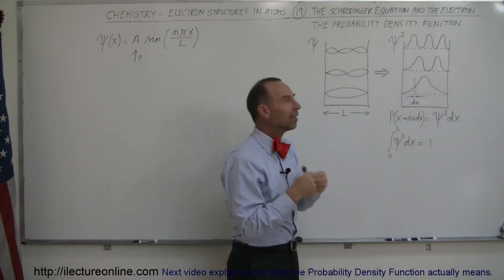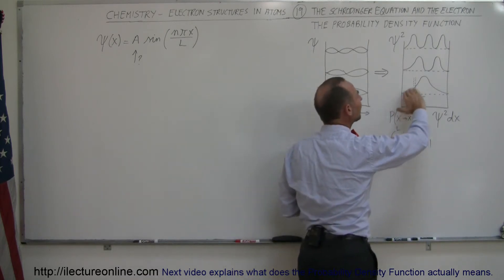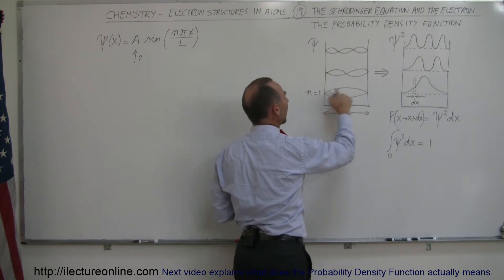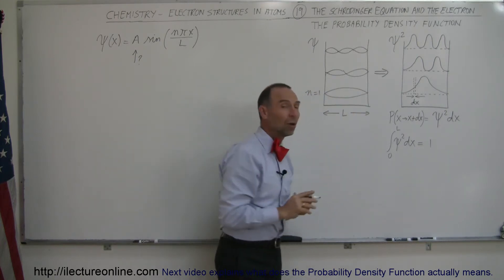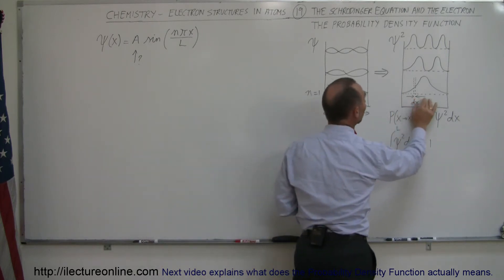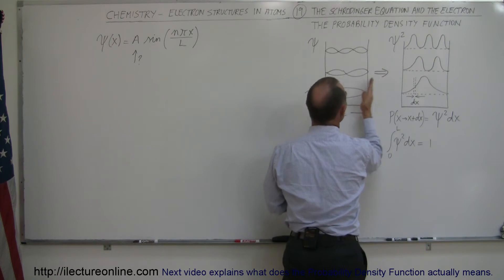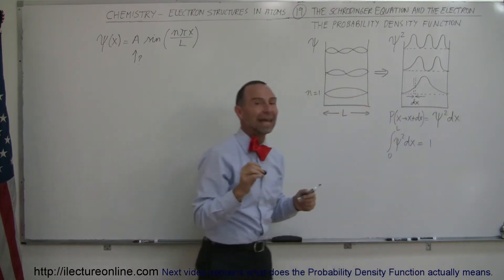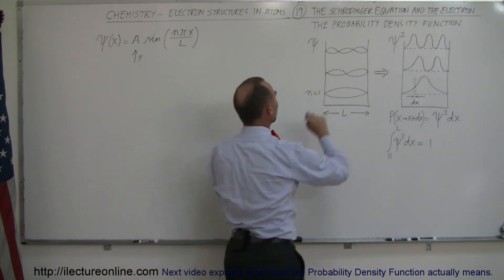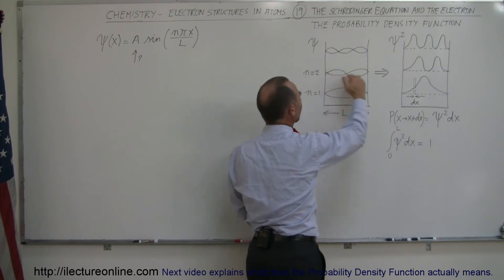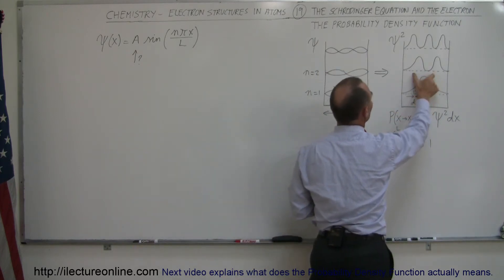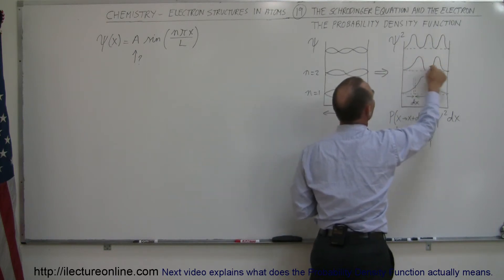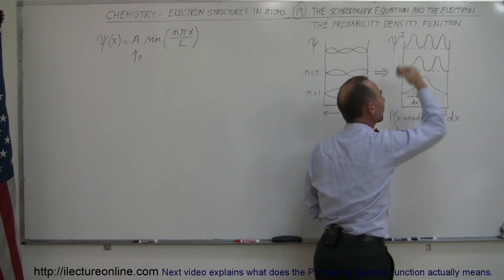We come up with a probability density function that describes the probability of finding the electron. If an electron is in its lowest energy state, N equals one, the wave looks like a single arch, meaning the electron is most probable right at the halfway point between the two ends of the box and has zero probability at the very edges. If the electron jumps to N equals two, the electron has the highest probability at the anti-nodes and zero probability at the nodes.